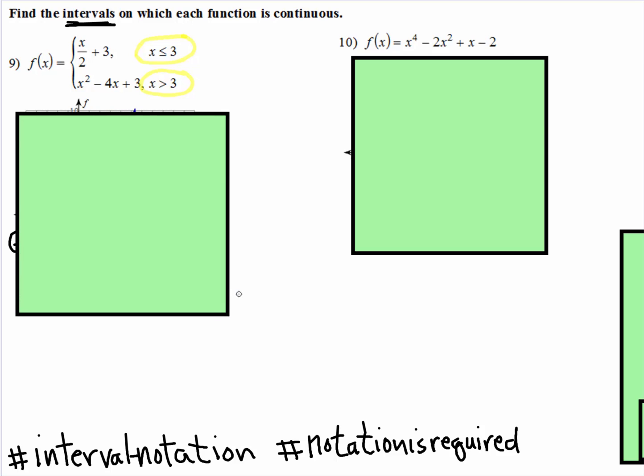Just plug 3 into both using substitution. So plug 3 in - there is 3 halves plus 3. Will that equal the same height as when you plug this in? So 3 squared is 9 plus 3 is 12, subtract 4 times 3.